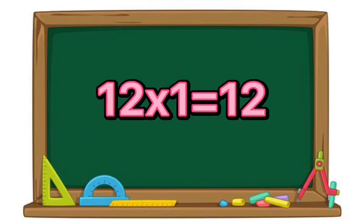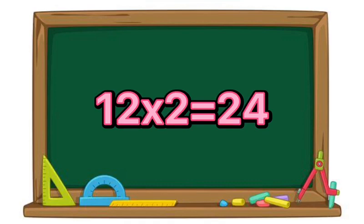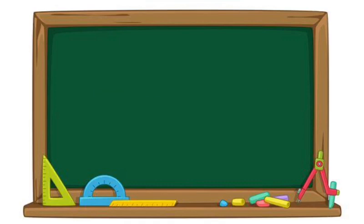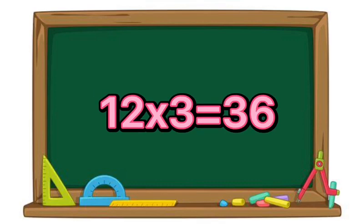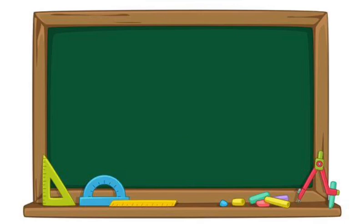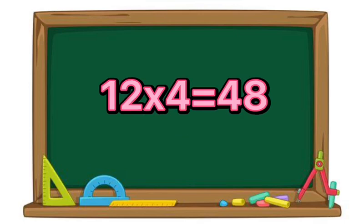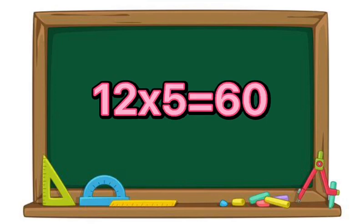12 times 1 equals 12. 12 times 2 equals 24. 12 times 3 equals 36. 12 times 4 equals 48. 12 times 5 equals 60.